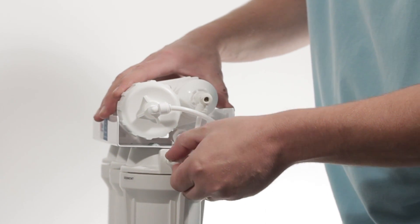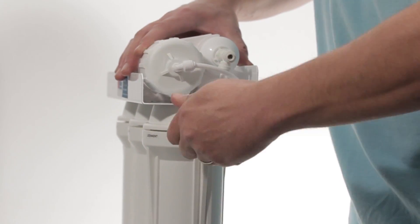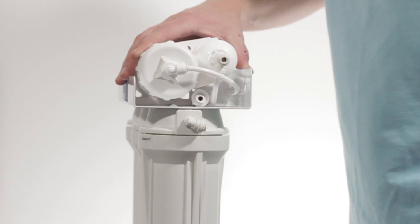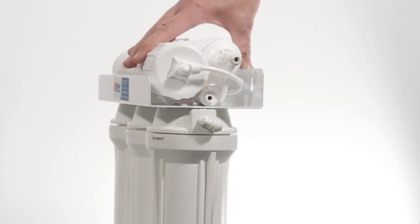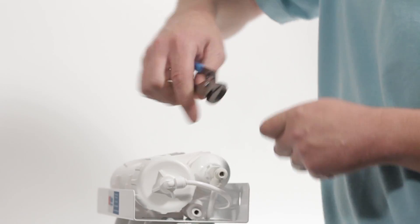Then you're going to place your fitting back into your RO system and turn it clockwise to tighten it. Once you have it in, then you can use a small pair of pliers or channel locks to snug it up the rest of the way.